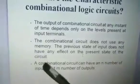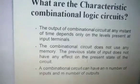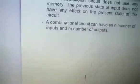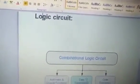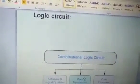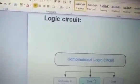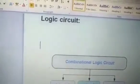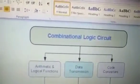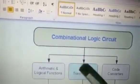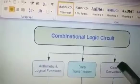The combinational circuit can take n number of inputs and can give m number of outputs. Depending upon the work it performs, we can classify combinational logic circuits in three ways: first, circuits which perform arithmetical functions; second, circuits which help with data transmission; and third, circuits which help to convert.